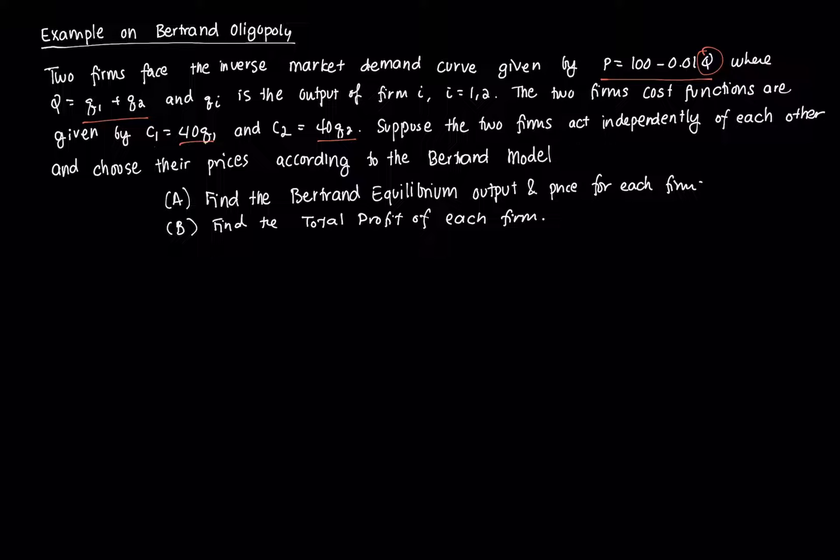Now we're also going to further assume that the firms act independently of each other and that they choose their prices according to the Bertrand model. We're asked to find the Bertrand equilibrium output and price of each firm, and we're going to find the total profit of each firm.